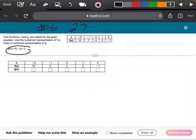Use the numerical representation of f to make a numerical representation of g. Okay, so we're going to make a table, right? So look, we already have our table for the original function here. Now, we're going to make a new table. I know they give us one here, but we're going to make our own table.